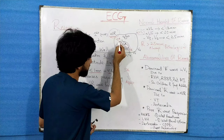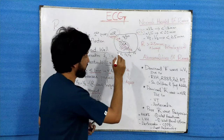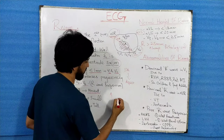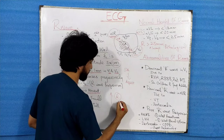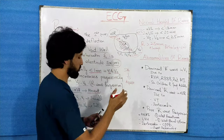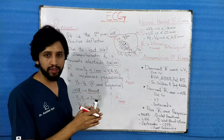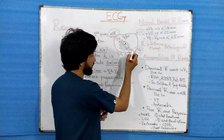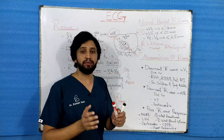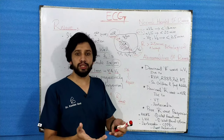The impulse is still moving toward V3 and V4. In V5 and V6 you will see a tall R wave, because the impulse has fully moved toward those leads. In V3 and V4 it is still moving, so you see small spikes there. In V5 and V6 you see a dominant R wave. This is the normal pattern usually seen on an ECG paper.